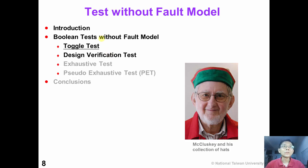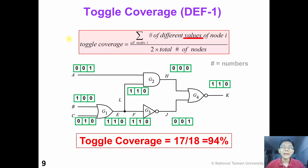Now we will talk about the first Boolean test without full model: that is toggle test. The idea of toggle test is pretty simple — we just try to toggle every signal node as much as possible.